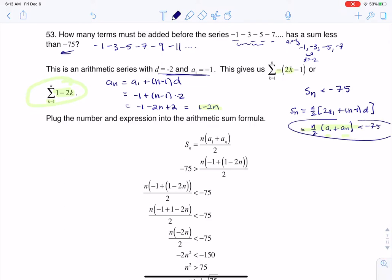So if we're going to use this version, I would have that n over 2 times a sub 1, there is negative 1, plus a sub n which is 1 minus 2n. That has to be less than negative 75. And that's actually what you see right over here in this inequality.